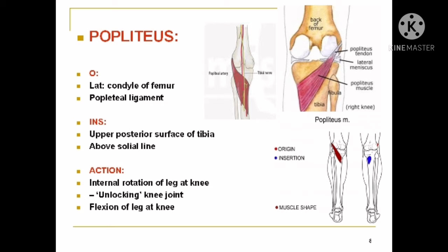The popliteus muscle arises from the lateral condyle of the femur and the popliteal ligament. It inserts upon the upper posterior surface of the tibia above the soleal line. In the diagram you can see the muscle origin and insertion, and you can also see the popliteal artery and tibial nerve passing above the substance of the muscle. Its function is flexion of the leg at the knee and produces unlocking — that is, internal rotation of the leg — at the knee joint.